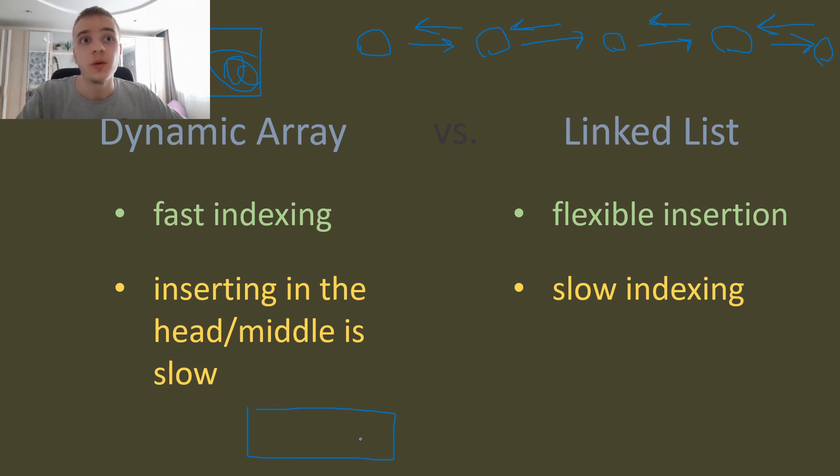In the next part we're going to be implementing both dynamic array and linked list — or maybe I'll split them into two parts. The next part will be the dynamic array implementation, and the part after that will be about linked list implementation. I'm going to implement them in C++, but the general idea is the same and not dependent on any language. There are trade-offs, and depending on the problem you're trying to solve, your choice will obviously be dictated by the problem. Thank you. Bye.